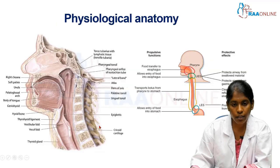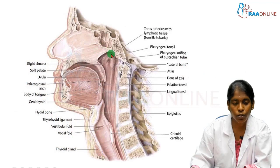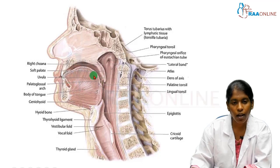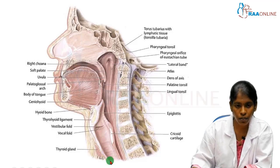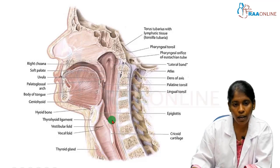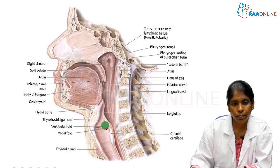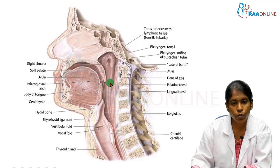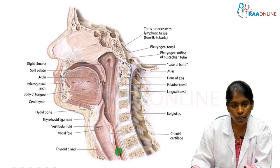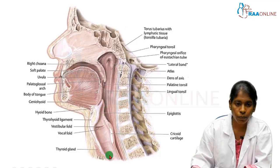First we will see the physiological anatomy. The first picture shows the sagittal section of the head and the neck. Here we have the nasal cavity, the oral cavity, and the tongue. This part is the nasopharynx, this is the oropharynx, and this is the laryngopharynx. Anteriorly you have the larynx and the trachea — the respiratory tract — and posteriorly you have the esophagus, part of the gastrointestinal tract. The oropharynx is connected to the oral cavity and to the nasal cavity through the posterior nares, and it is also connected to the esophagus and the respiratory tract.